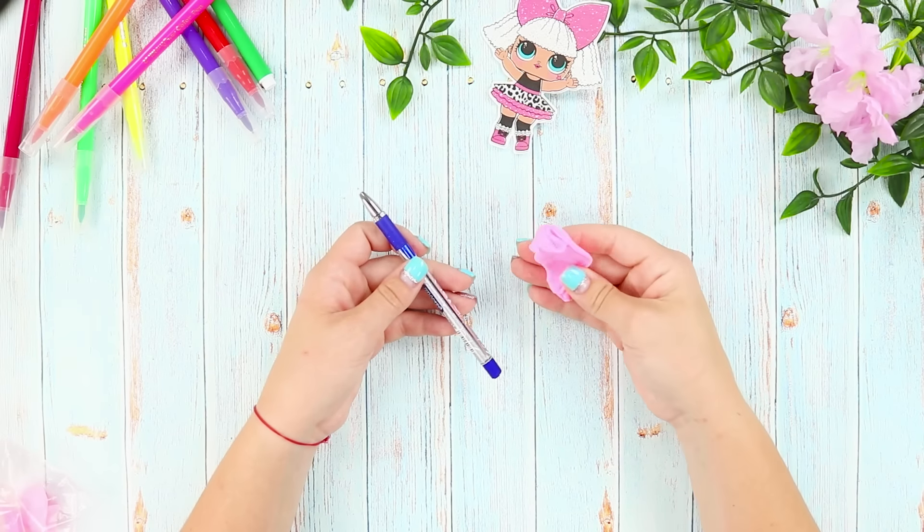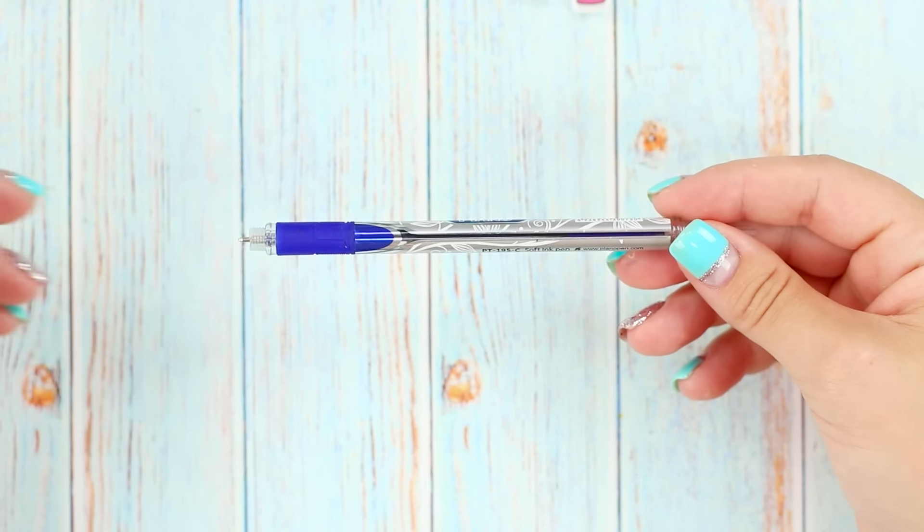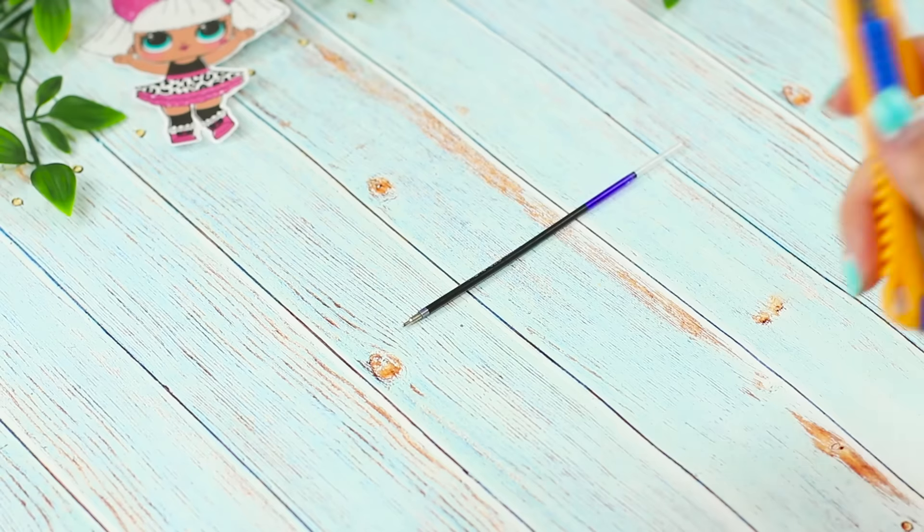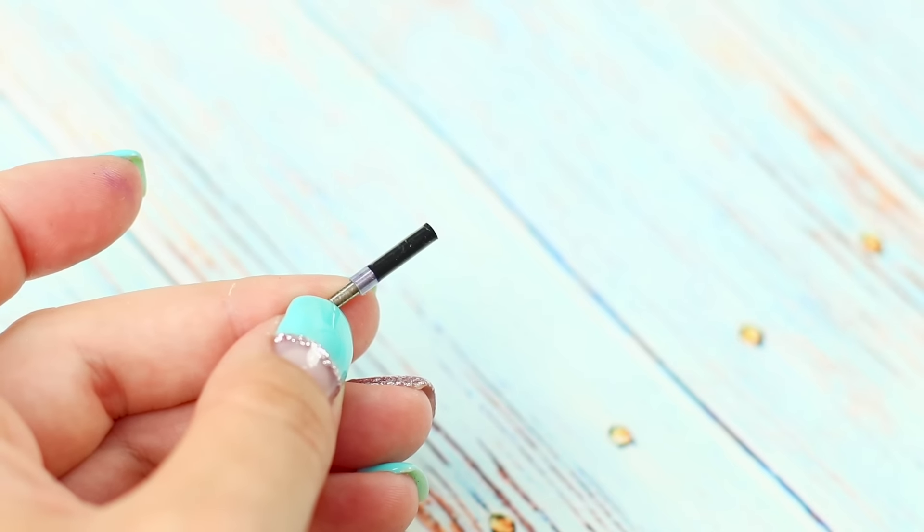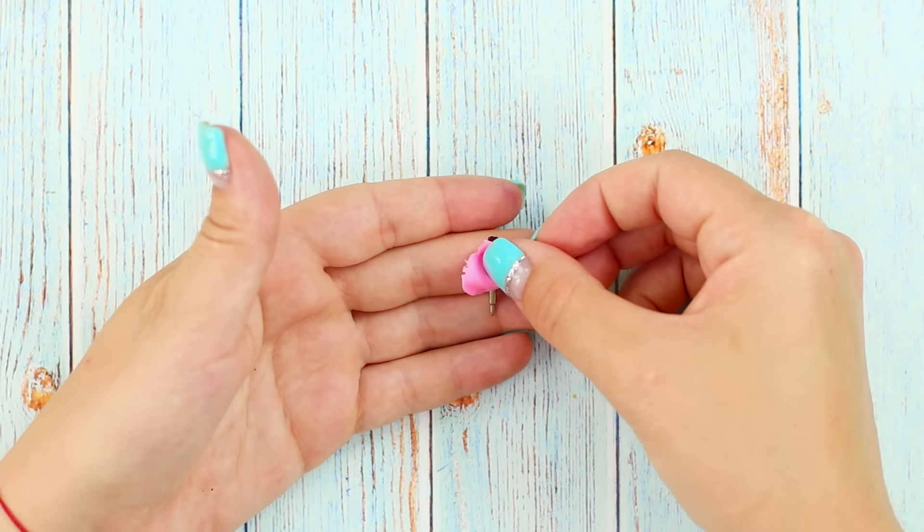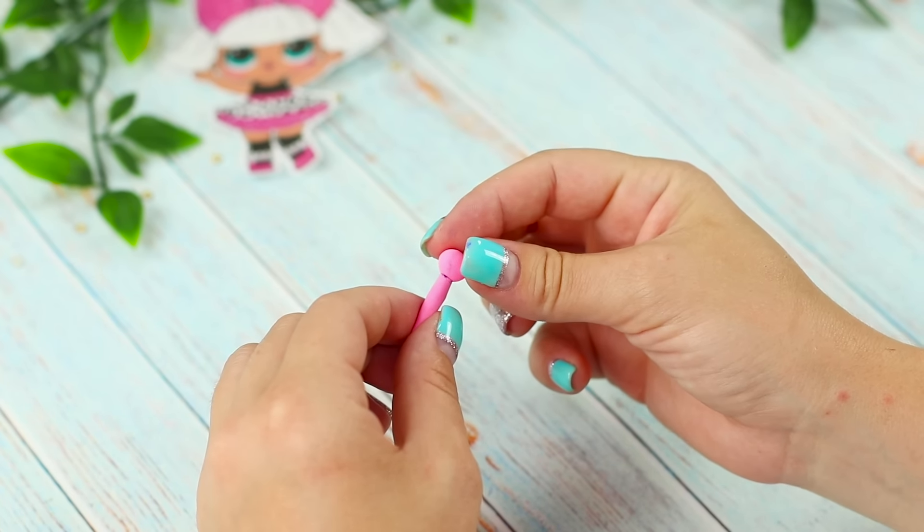And now take light clay and a ballpoint pen. Take the pen apart and take out the ink. Cut off the tip with a utility knife. Cover the rod with clay and glue a ball to the place of the cut.